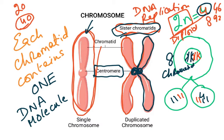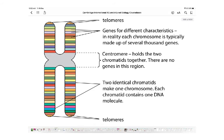One chromosome, when its copy is formed, is called sister chromatids. The ends of chromosomes are protected areas called telomeres — just like the plastic tips on shoelaces that protect the ends. Telomeres are found at both ends of the chromosome.